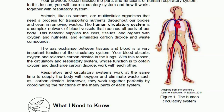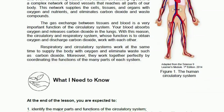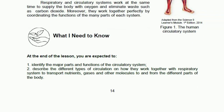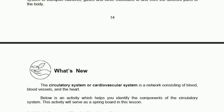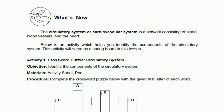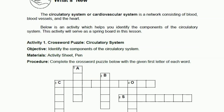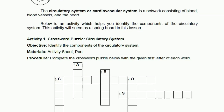So read this and then you can continue to Activity Number 1, the crossword puzzle. This topic will let you know about the major parts and functions of the circulatory system. The first part is 'What's New.' The circulatory system, or cardiovascular system, is a network consisting of blood, blood vessels, and the heart. Below is an activity that will help you identify the components of the circulatory system.